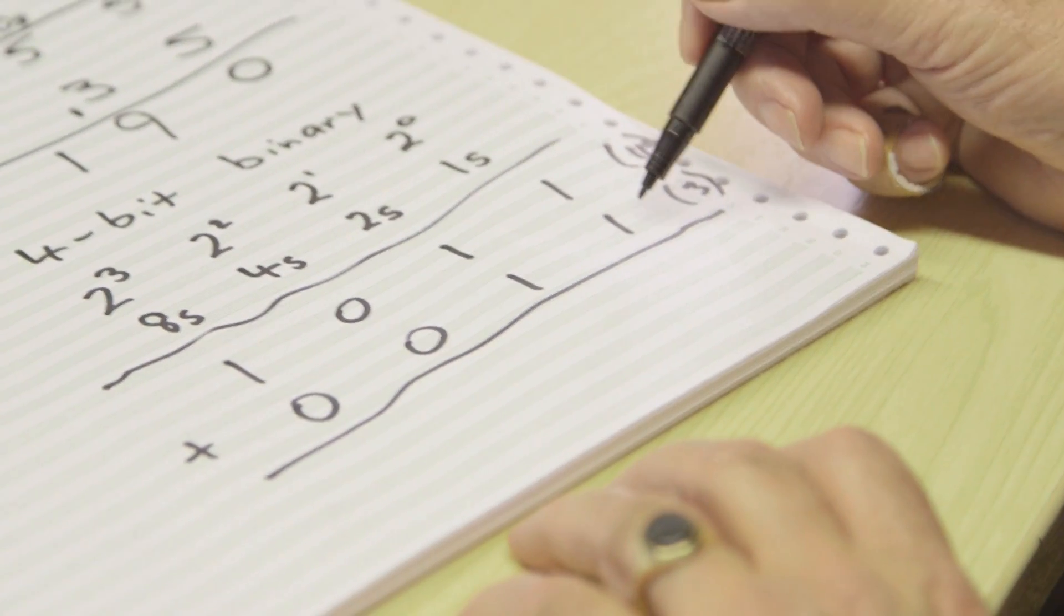But again, let me emphasize that the business about carrying digits across applies with just the same ferocity in binary as it does in decimal. So this is what you do. You start off always on the right-hand column.